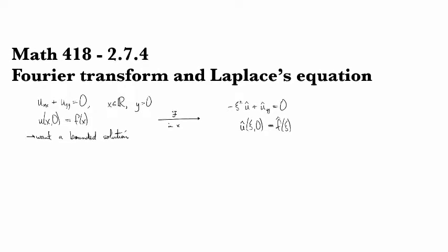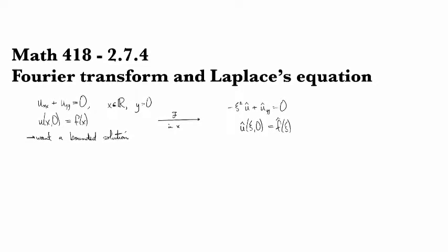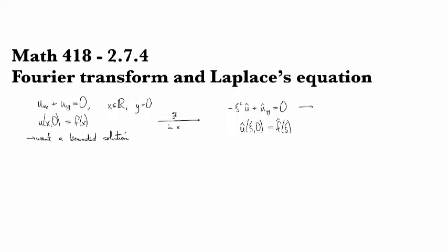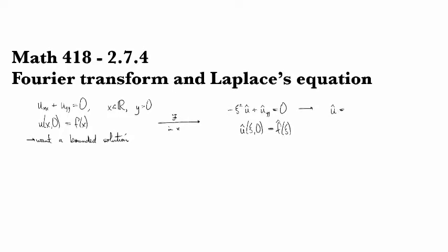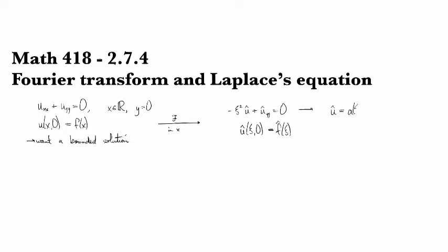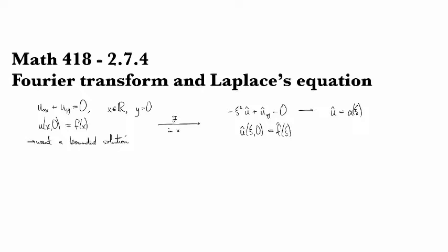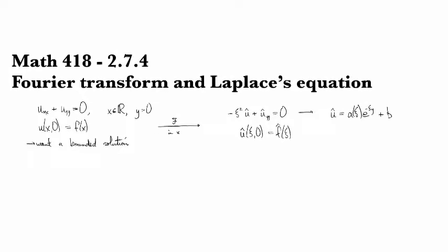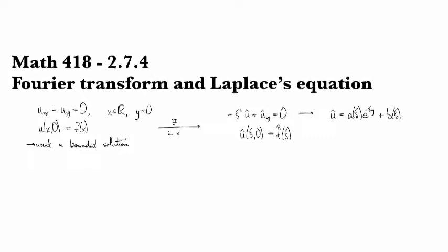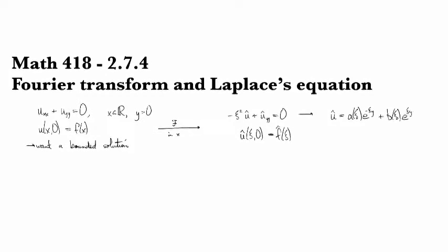All right, and so we can solve this differential equation and find that u-hat looks like some function of xi times e to the minus xi y plus some other arbitrary function of xi times e to the positive xi y.